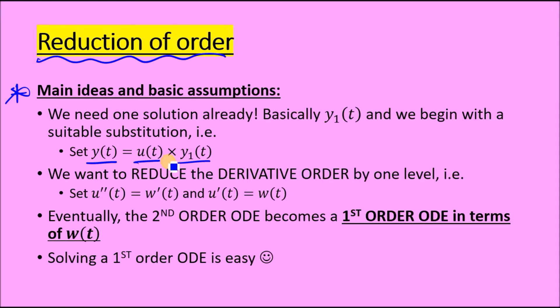Now from this, the aim is to differentiate this twice. Reason why is because we're going to substitute this, its first derivative, and second derivative back into your second order ODE. When you do that, you'll just have an equation in terms of u, u prime, and u double prime.